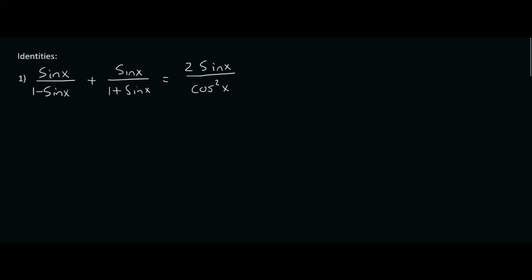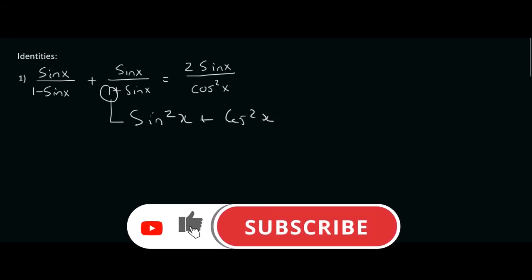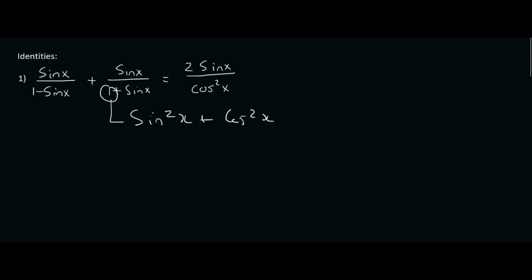With number one, I often see students struggle at identifying what to do. What they sometimes want to do is say, oh, I see there's a one, so I know that can be changed to sin squared x plus cos squared x. But that's not simplifying — that's making it more complicated, because you're going from one term to two terms. You always want to try to reduce your number of terms. There are special instances where you have to expand, but that only happens once or twice with identities. This isn't one of them.